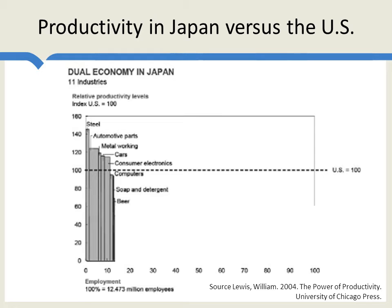Here we're showing some data from William Lewis's book, The Power of Productivity, on productivity levels in Japan compared to the United States. Lewis was the head of a large consulting group at McKinsey & Company, which did this study over many countries and industries around the world. Compared to a U.S. productivity level of 100, Japan did extremely well in steel, automotive parts, metalworking, cars, and consumer electronics. This makes sense — we know Japan exports a lot of these goods, which suggests they can produce more at lower costs. Japan is able to produce more valuable output using less valuable inputs than in the United States.